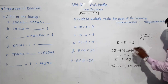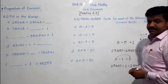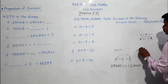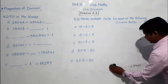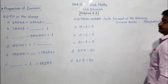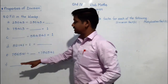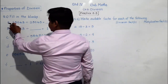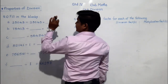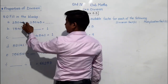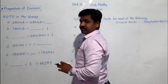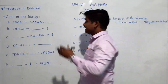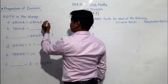Based on these two properties, we are going to solve Practice 5.5. Question 1: fill in the blanks. All these examples are based on these two properties. 23,043 divided by 23,043 — the number is divided by itself — so what will be its answer? Its answer will be 1. If any number is divided by itself, the answer is 1.